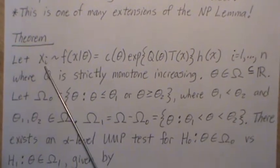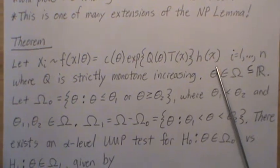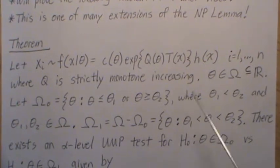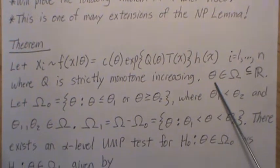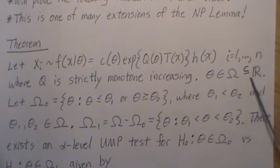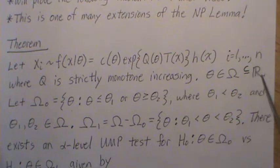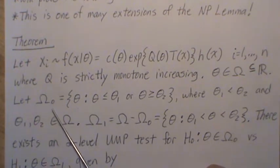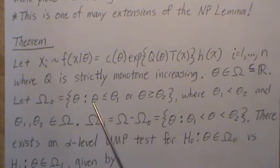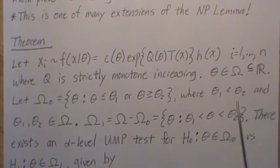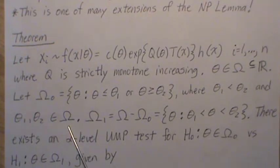Let our data be distributed in the one-parameter exponential family with sample size n. q is strictly monotone increasing — we'll say increasing — in θ. The parameter θ lives in some parameter space Ω, which is a subset of the real numbers. We let Ω₀ be all θ such that θ < θ₁ or θ > θ₂, where θ₁ < θ₂, both in the parameter space.